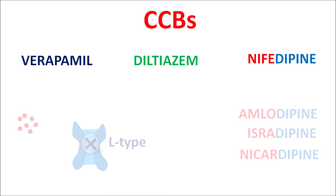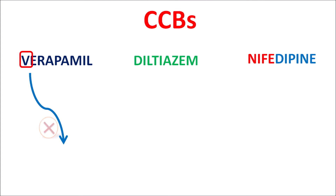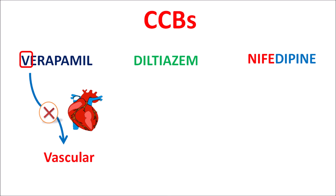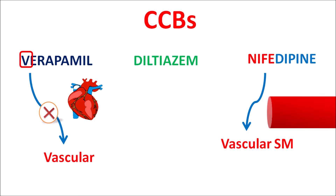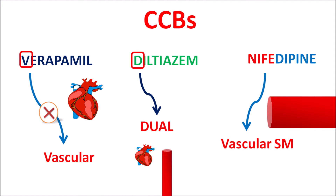For verapamil, the letter V stands for — not vascular smooth muscle — meaning verapamil acts on cardiac muscle and blocks L-type calcium channels present on the heart. On the other hand, nifedipine acts on L-type calcium channels present on vascular smooth muscle, producing vasodilation. Diltiazem has a dual action (D for dual), blocking L-type calcium channels expressed on both the heart and vascular smooth muscle. So their location of action differs: verapamil acts on the heart, dihydropyridines on vascular smooth muscle, and diltiazem on both.